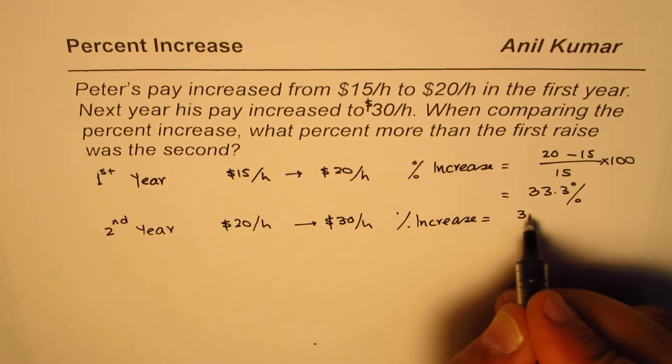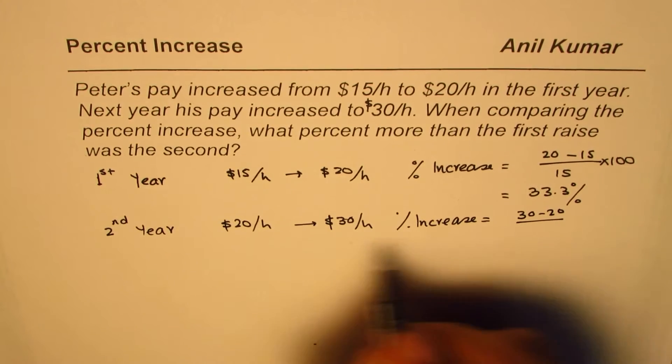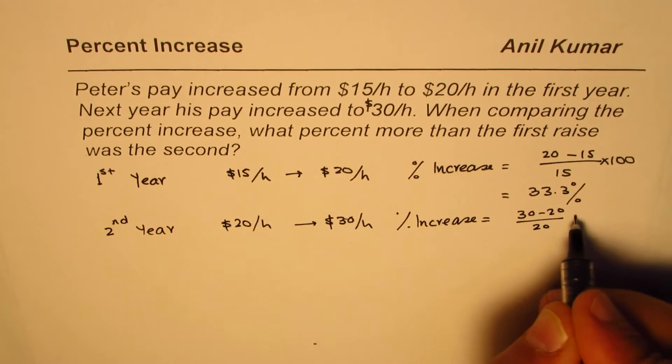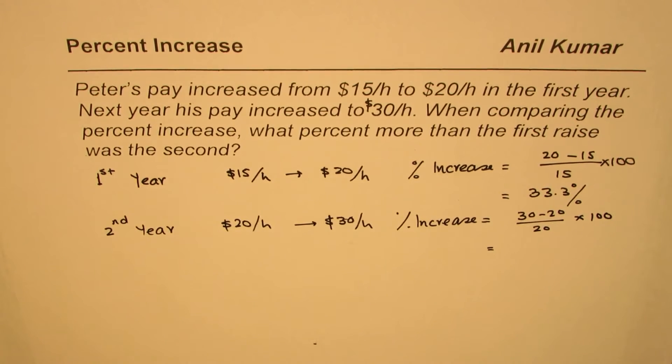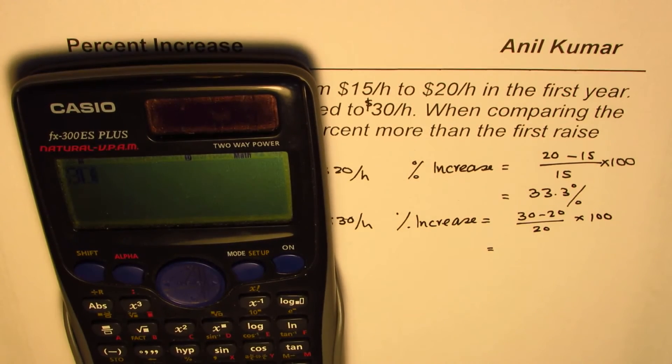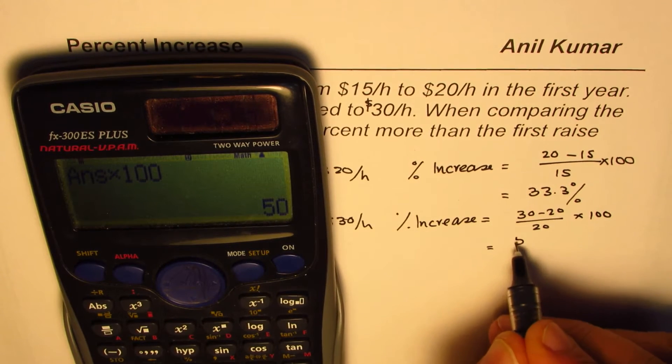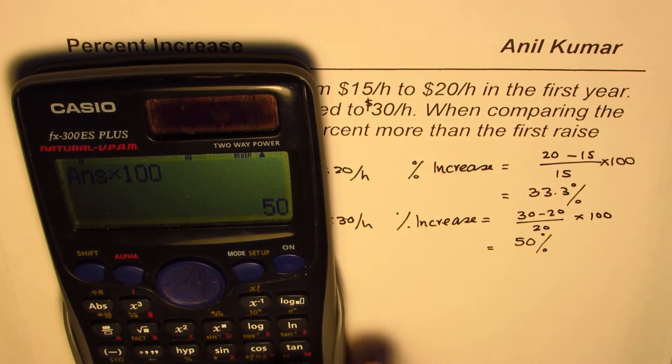Change which is 30 minus 20 from the original which is 20 times 100. So that is equal to 30 minus 20 which is 10 divided by 20 times 100 equals to 50 percent.